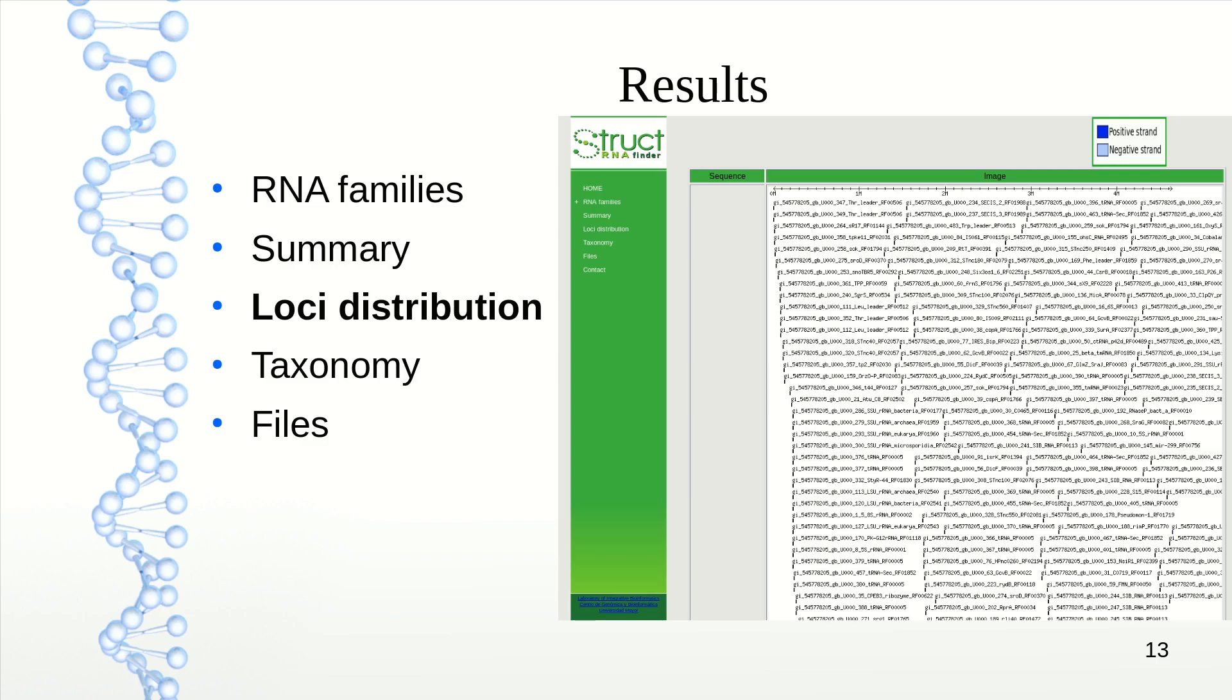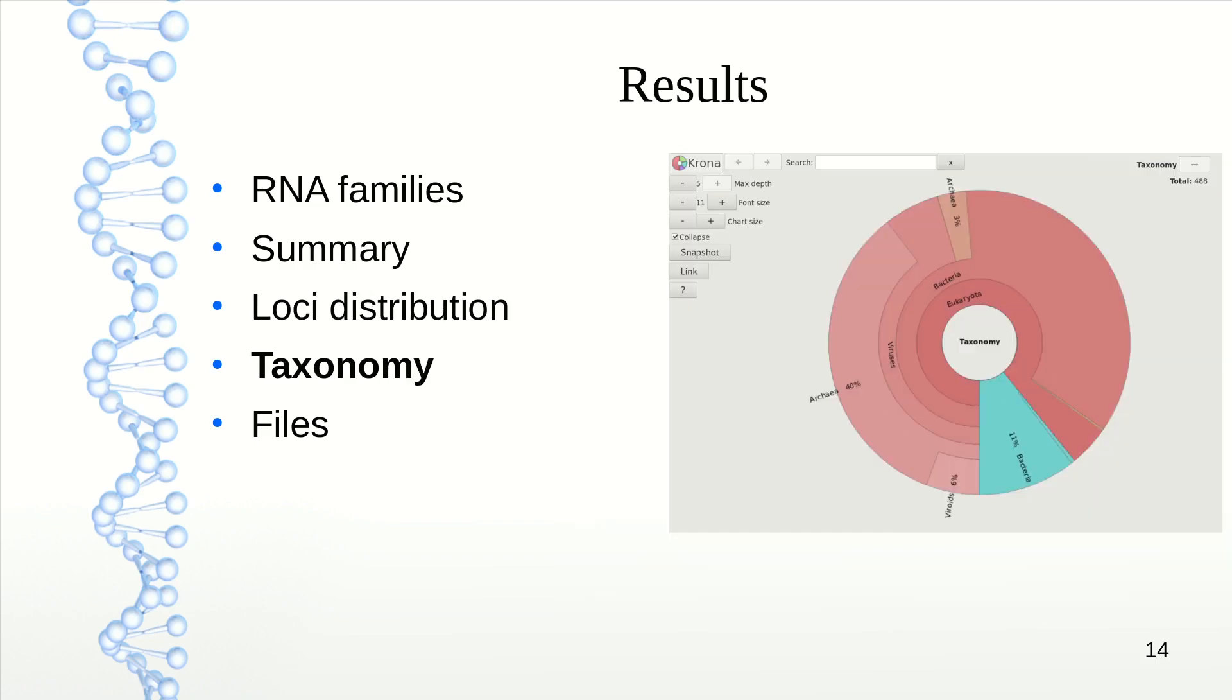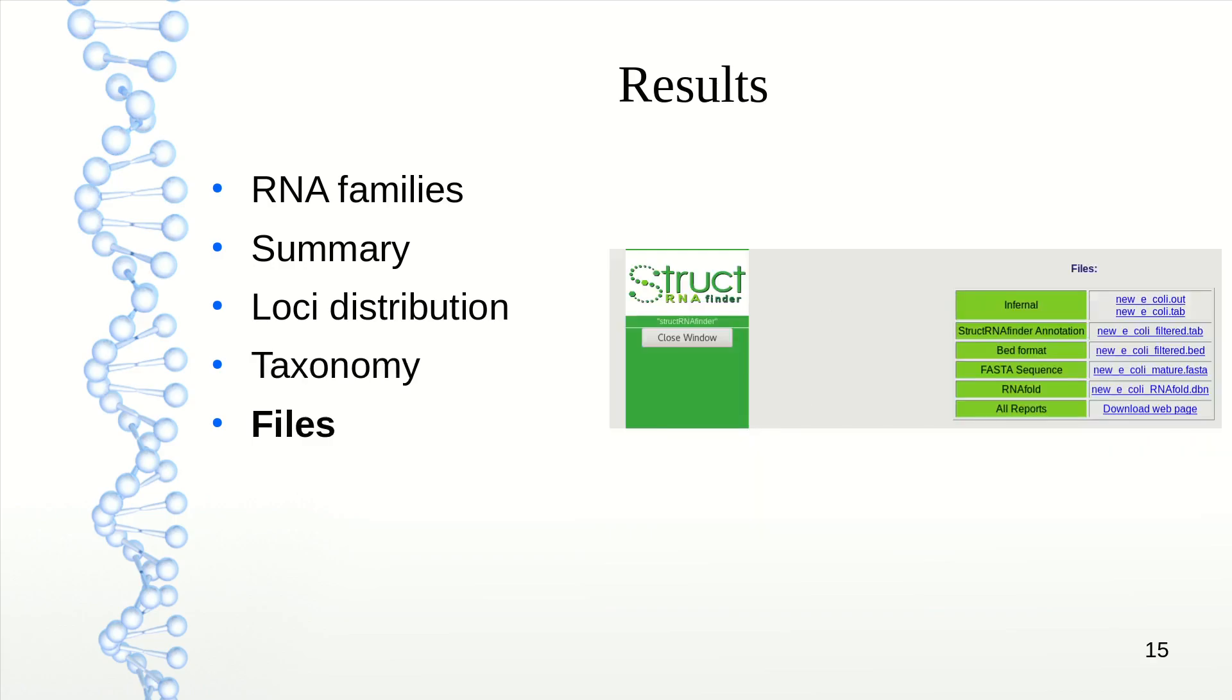Next, we have the loci distribution, an overview of where all results are found. You can see every RNA sequence has a position on the full sequence. Then taxonomy, showing specific organisms where each RNA was found - 40% from archaea, 11% from bacteria. Last, we have the files section with all intermediate files used to generate the HTML. Instead of assembling 6 files together, it does that for us.